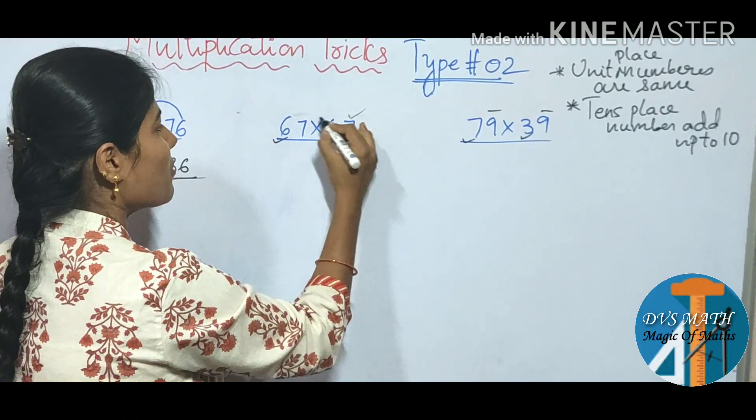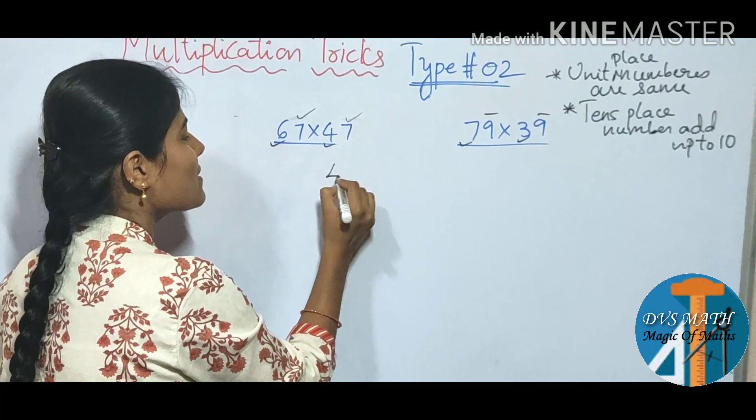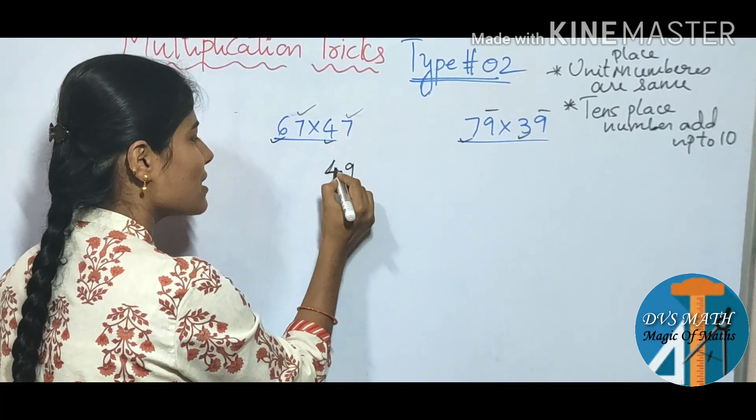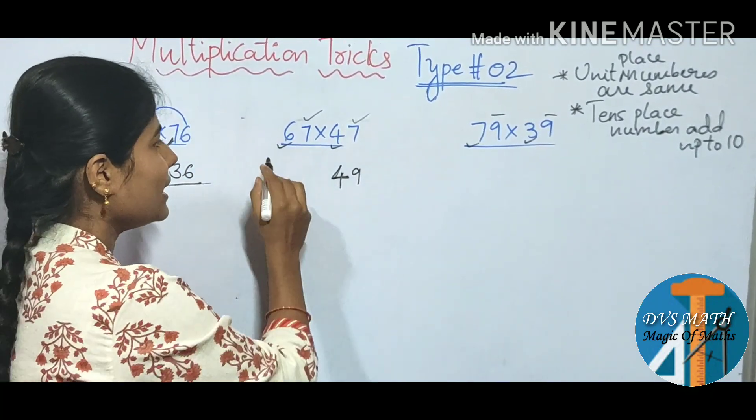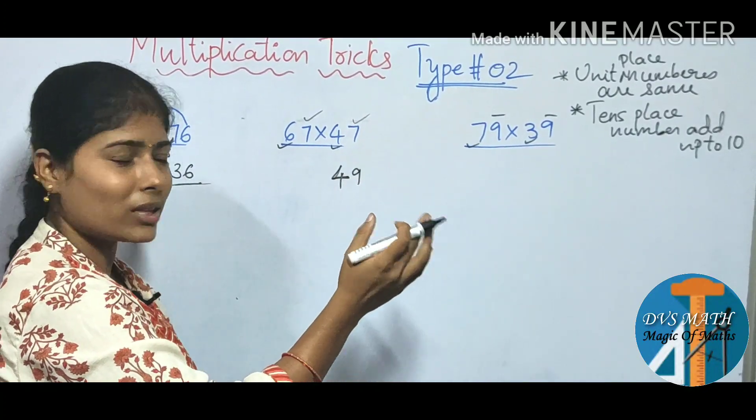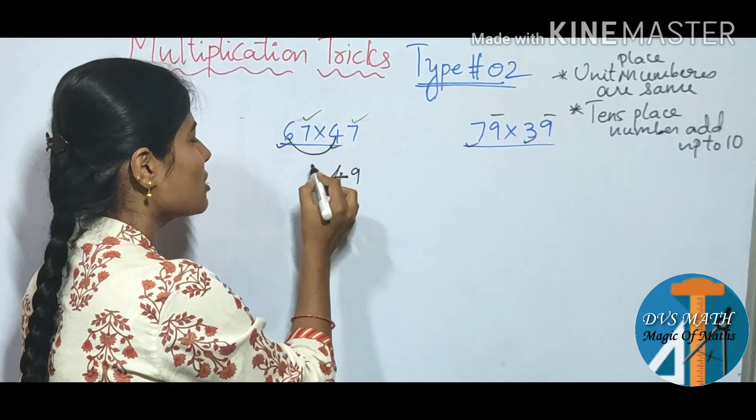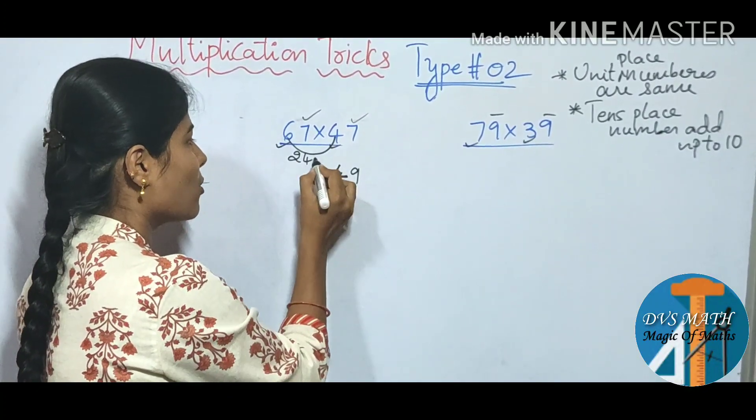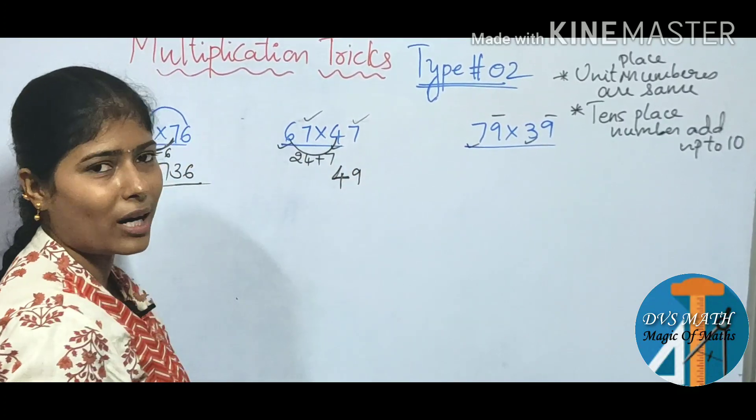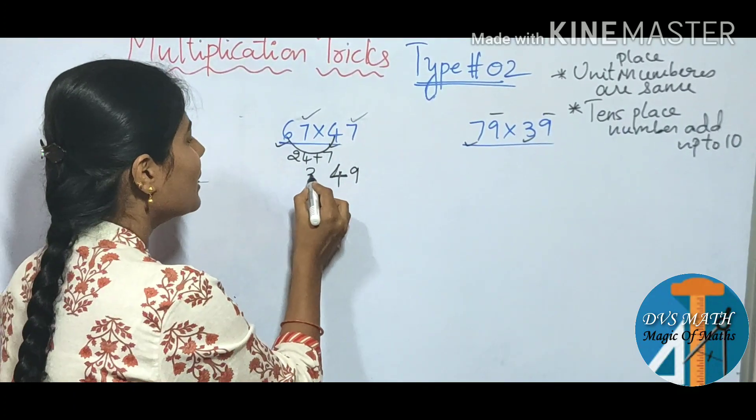So same number first multiply. 7, 7 is 49. So this is the number of 10 times. 6, 4 is 24. Plus same number add.